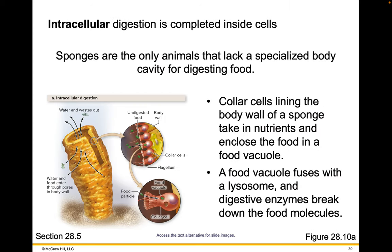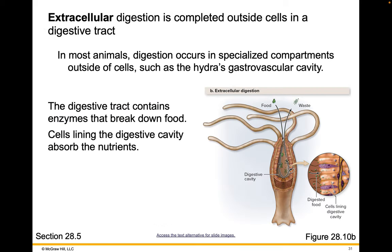Intracellular digestion is completed inside the cells. The prefix 'intra' means within. Sponges are the only animals that lack a specialized body cavity for digesting food. They have collar cells lining the body wall that take in nutrients and enclose the food in a food vacuole — a membrane-bound packet of food. The food vacuole fuses with a lysosome, which releases digestive enzymes to break down the food molecules. Extracellular digestion is completed outside cells in the digestive tract. In most animals, digestion occurs in specialized compartments outside of cells, such as in the hydra's gastrovascular cavity. The digestive tract contains enzymes that break down food, and cells lining the digestive cavity absorb the nutrients.